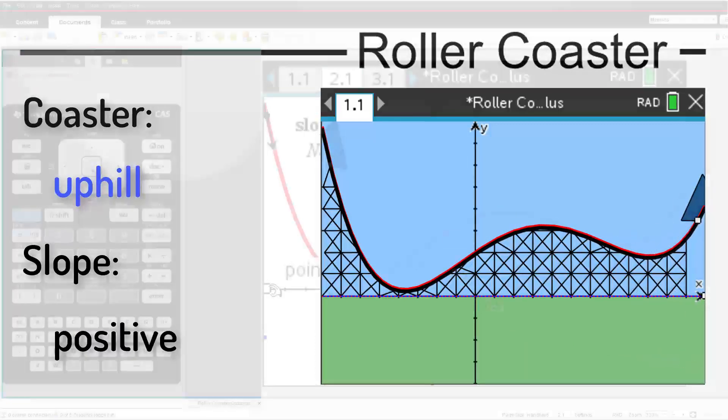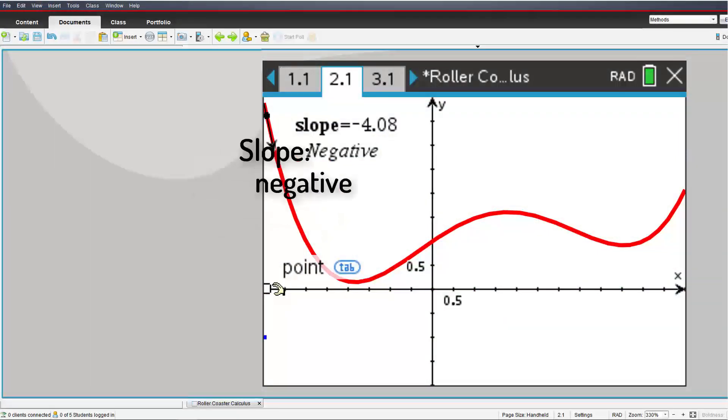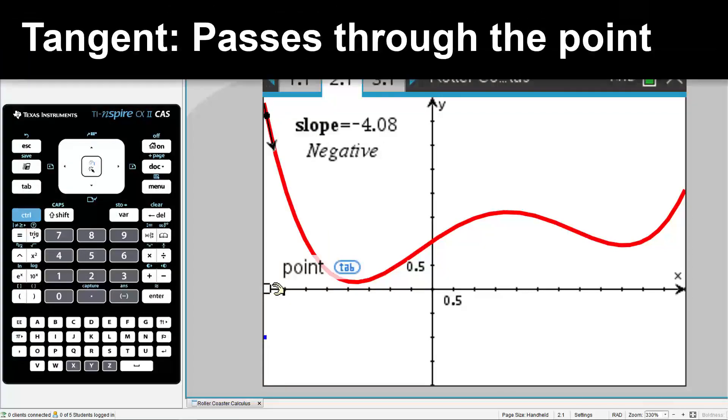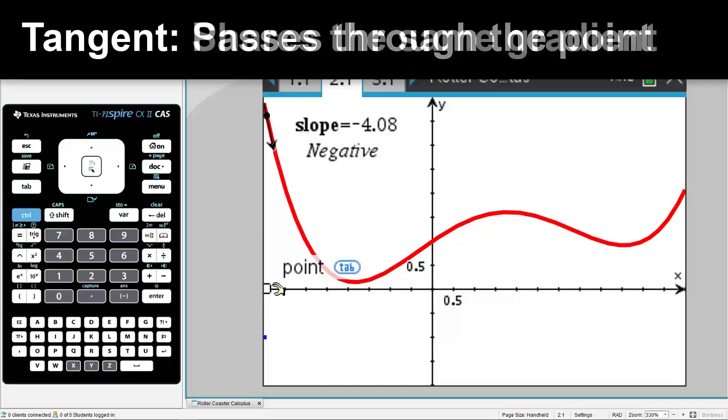Let's remove the roller coaster graphics and focus on the function that is currently representing our ride. The trolley is replaced with a tangent line, a line that passes through the point on the curve and shares the same gradient at that point.